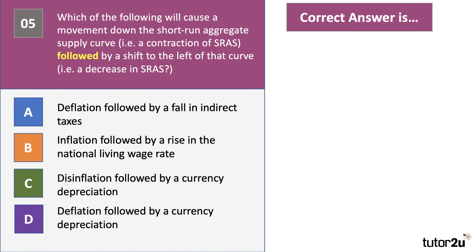The answer to question five is D. Deflation — a fall in the general price level — would cause a contraction down the short run aggregate supply curve, as producers have less incentive to supply when prices are lower and profit margins are weaker. Then, a currency depreciation — a fall in the pound — increases the cost of imported components, raw materials, and energy, causing an inward shift of aggregate supply.